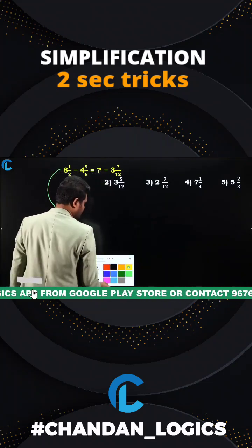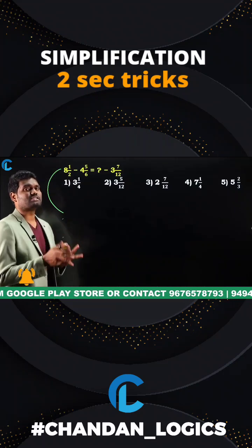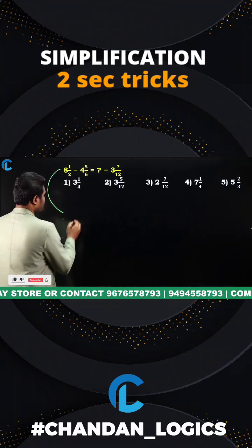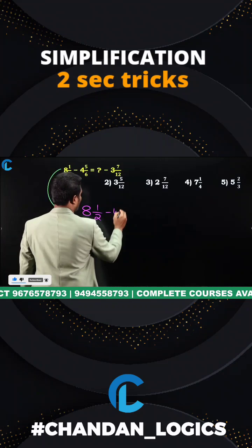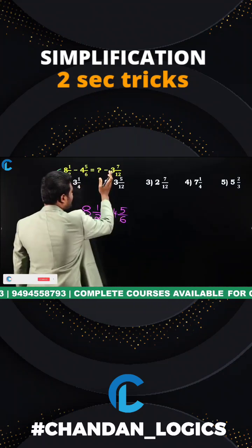So don't try to simplify it. Now rather than simplifying, what you have to do is calculate integer value separately, fraction value separately. Now observe here, this will be 8 and 1 by 2 minus 4 and 5 by 6.